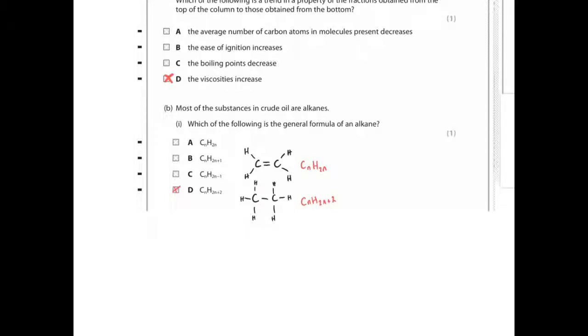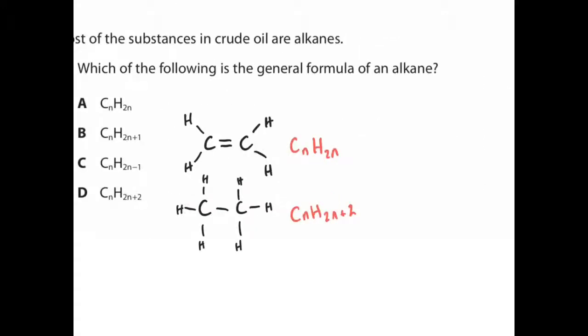So what that means is for every number of carbons, so here this would be two carbons, we have H2n, so we have double the amount of hydrogens. 2n means doubling that number, two times two, hydrogen plus two at the end. So CnH2n plus two. Whereas if you look at alkenes, it's just CnH2n, so it just means whatever number of carbons you have, you have double the number of hydrogens. But with alkanes, double plus two to account for the tail ends.